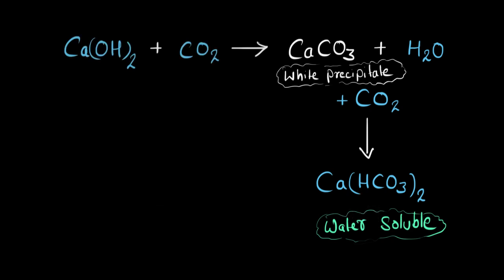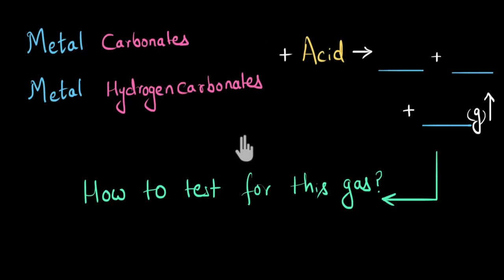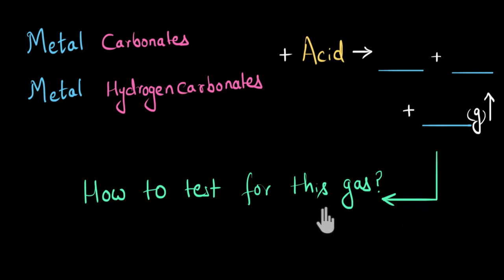So the lime water was colorless to begin with; then when carbon dioxide reacted with it, it formed calcium carbonate which was white and insoluble in water, making the solution look milky white. Then more carbon dioxide reacted and formed calcium hydrogen carbonate, which was soluble in water — and that's why the solution became colorless again. Now you know why the lime water test is the sure shot test for carbon dioxide. To summarize: we learned how metal carbonates and metal hydrogen carbonates react with acids, what products are formed, what gas is released, and how to test for this gas.